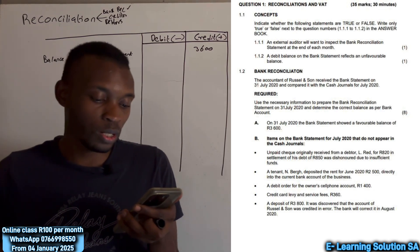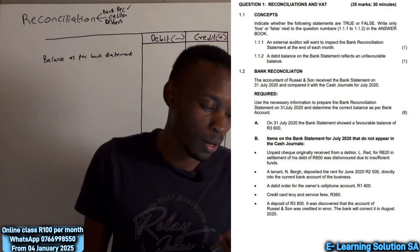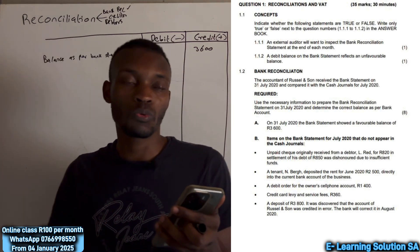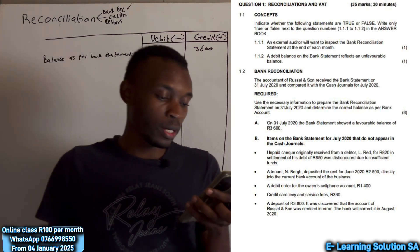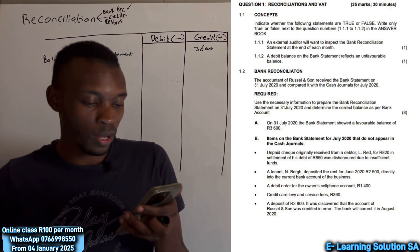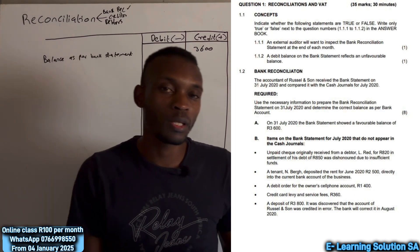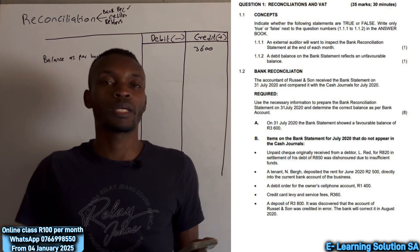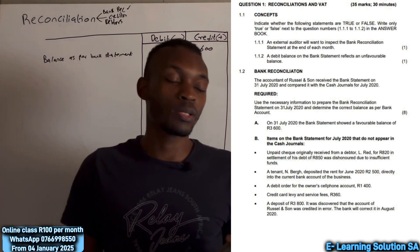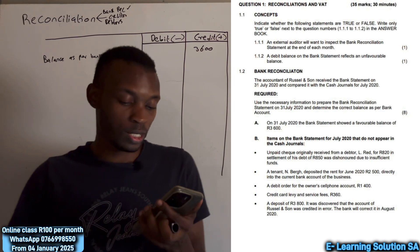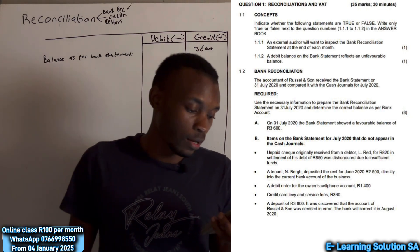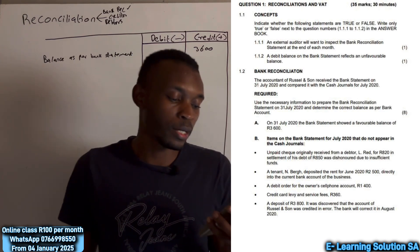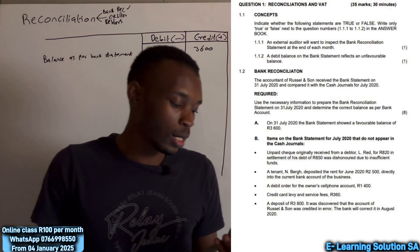A tenant deposited rent for June 2020 of 2,500 directly into the bank account — we would record this under cash receipts because we received money. A debit order for the owner's cell phone of 1,400 would be recorded as drawings under the cash payment journal. A credit card levy and service fee of 360 would also be recorded under cash payment journal.